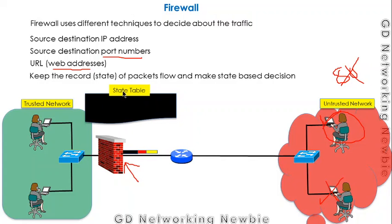Future decisions can then be made on the basis of this state table. So we have multiple decision criteria by which the firewall can decide whether to allow the packet or just discard it.